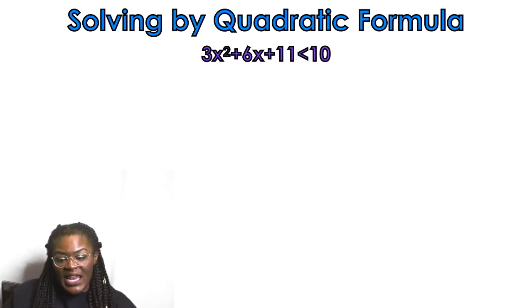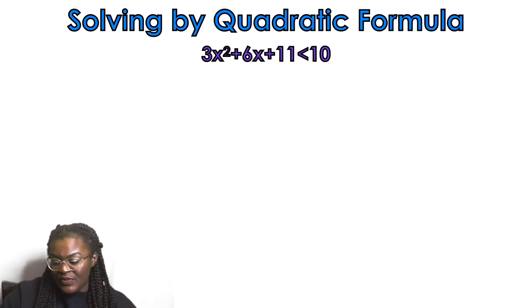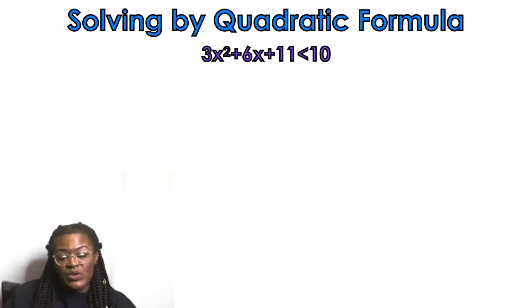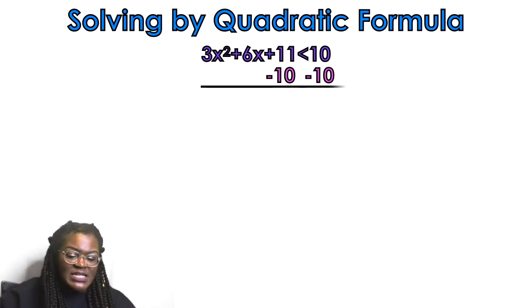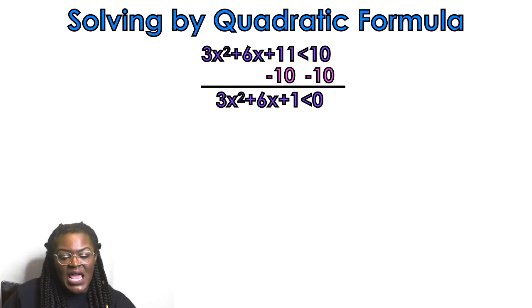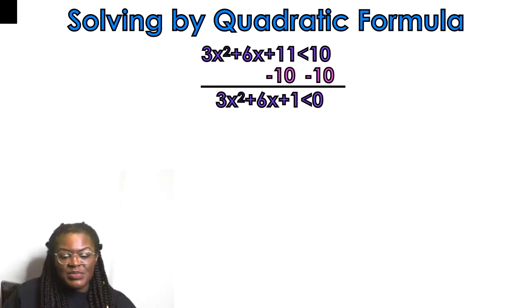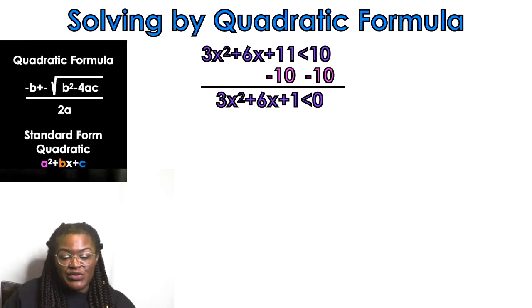Pause the video and see if you can do the next example on your own. The first thing for the quadratic formula is to set it equal to 0 — just like factoring. Subtract 10 from both sides, and I get 3x² + 6x + 1 is less than 0.